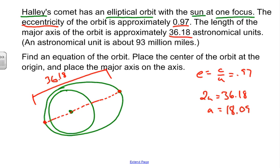We're asked to find an equation of the orbit. Place the center of the orbit at the origin and place the major axis on the x-axis. We're going to find an equation of this orbit. We have a focus length and we know that our center is going to be 18.09 units away from that. What we have right here is our a value. So we can start off by going x squared.